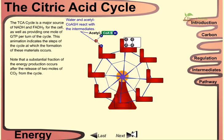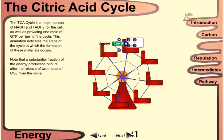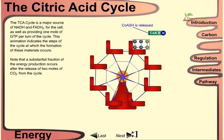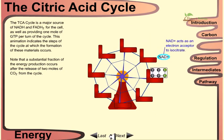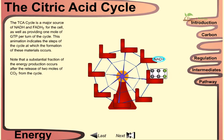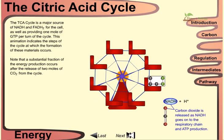Water and acetyl-CoA react with intermediates, coenzyme A is released, and the molecule citrate is produced. Then NAD+ acts as the electron acceptor for isocitrate and produces NADH. Carbon dioxide is released, NADH goes on to the respiratory chain, and ATP production occurs because NADH is the energy-containing molecule.